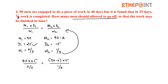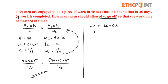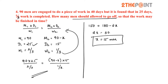Substituting values and simplifying the equation to solve for x, we get 150 equals 180 minus 2x, so 2x equals 30 and x equals 15. Therefore 15 men should be removed from the work.